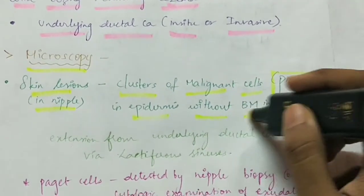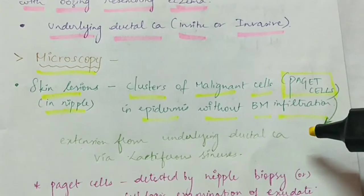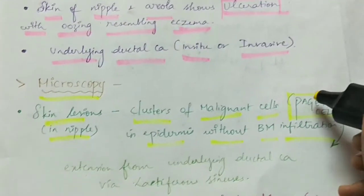They are seen in the epidermis without basement membrane infiltration. So they are confined only to the epidermis. The cluster of malignant cells are called as Paget's cells.